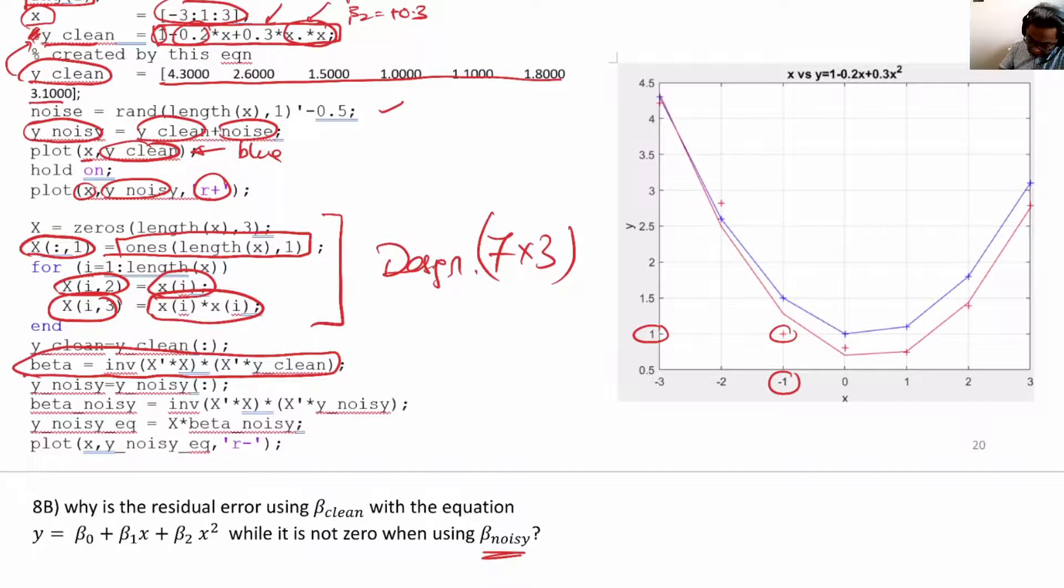β_clean equals x transpose x—the apostrophe here stands for transpose in MATLAB—inverse, you can see the inverse here, and x transpose y.